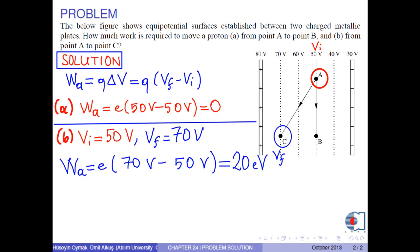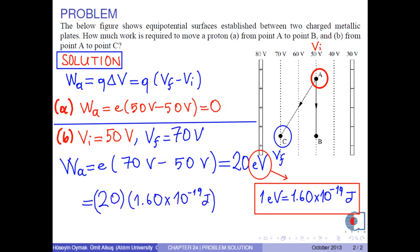Therefore, the result is 20 electron volts. We know that 1 electron volt is 1.60 times 10 to negative 19 joules. If you calculate, you obtain approximately 3.20 times 10 to negative 18 joules.